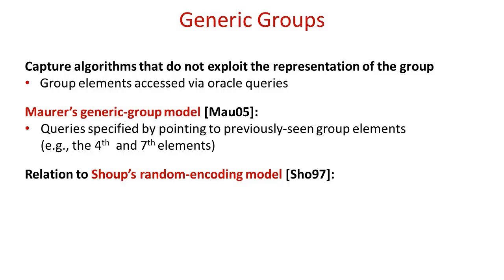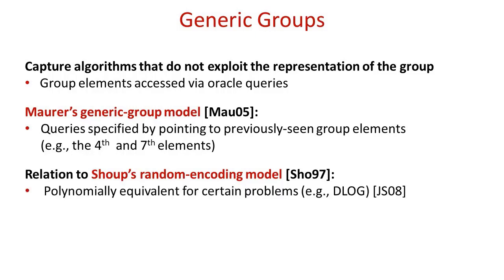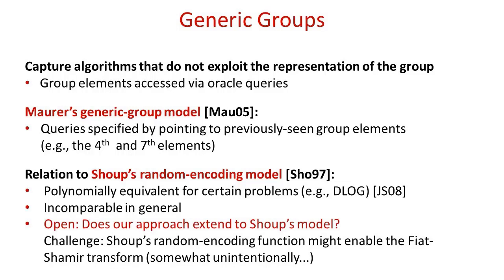This model is a bit different from the generic group model suggested by Shoup, in which each group element has an explicit random representation. These two models have been shown to be polynomially equivalent for certain problems such as the discrete logarithm problem, but generally the two models are incomparable. A natural open problem is whether our result can be proved within Shoup's model. One should note that our result can be circumvented by applying the Fiat-Shamir transform, and that the random injective mapping used in Shoup's model for explicitly representing group elements might potentially be exploited towards this goal.